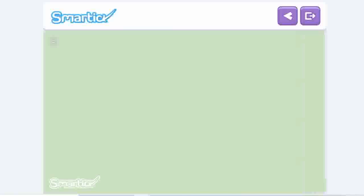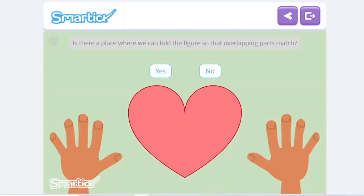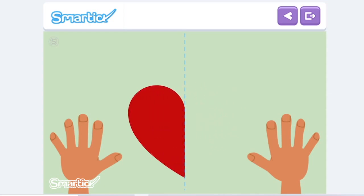Let's start by looking at Amy's figure. Is there a place where we can fold the figure so that overlapping parts match? That's it! If we fold it along this line, the overlapping parts will match up perfectly.